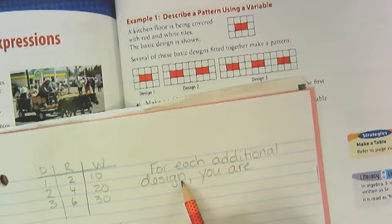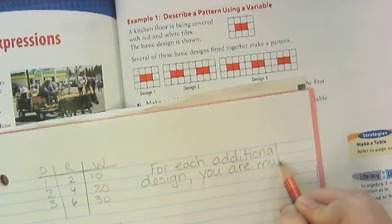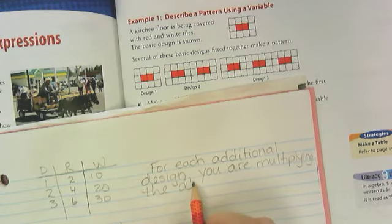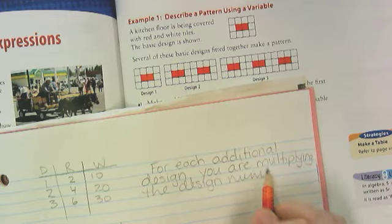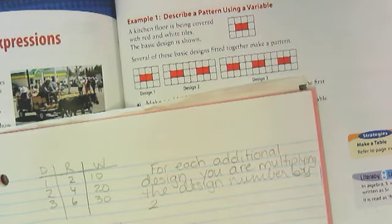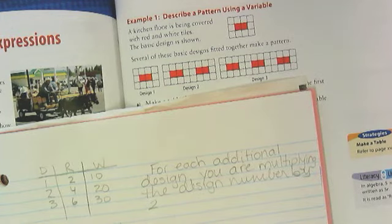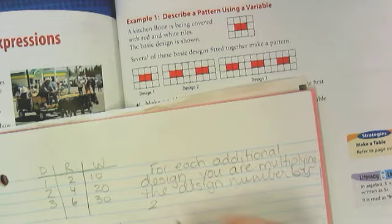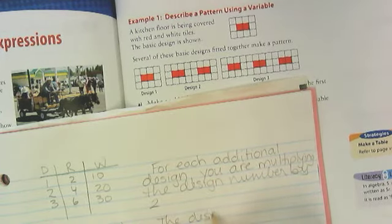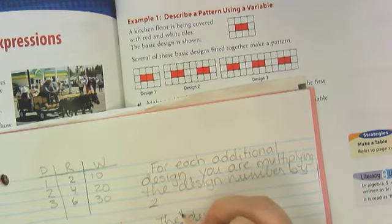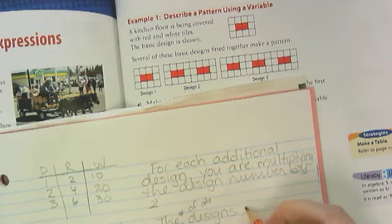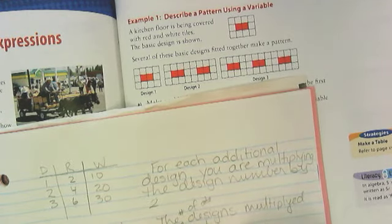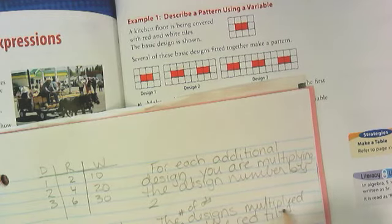So, for each additional design, you are multiplying the design number by two. That seems really complicated. Can we put it in a different way of saying, can we say this in a different way? Please stop talking. Yeah? The design multiplied by two equals the amount of red tiles. Okay. So, the number of designs multiplied by two equals the red tiles. Okay.